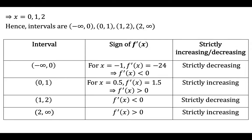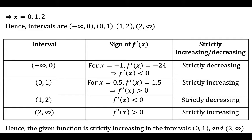We make a table with interval, sign of f dash x, and strictly increasing or decreasing. In the interval minus infinity to 0, f dash x is less than 0, so function is strictly decreasing. In the interval 0 to 1, sign of f dash x is positive, so function is strictly increasing. In the interval 1 to 2, f dash x is greater than 0, so function is strictly decreasing. Hence, the given function is strictly increasing in the intervals 0 to 1 and 2 to infinity.